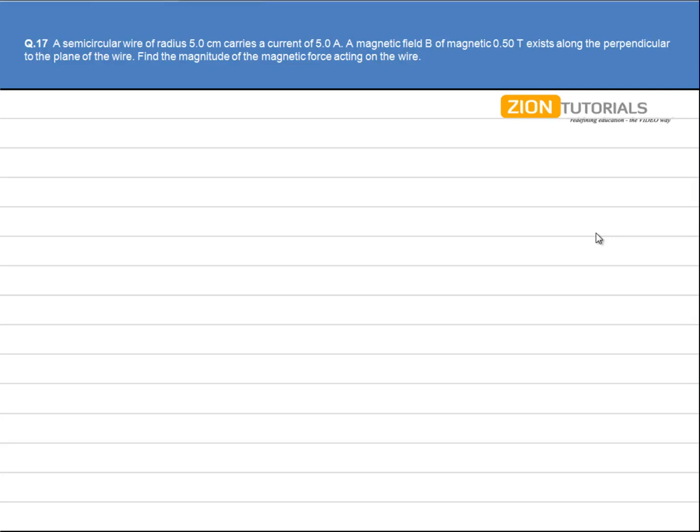A semicircular wire of radius 5 cm carries a current of 5 ampere. The magnetic field of magnitude 0.5 tesla exists along the perpendicular to the plane of the wire. Find the magnitude of the magnetic force acting on the wire.